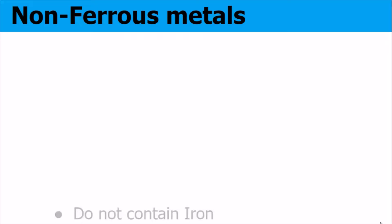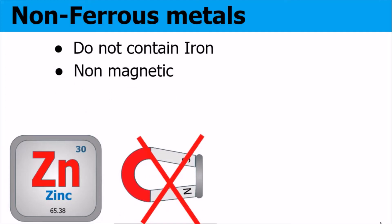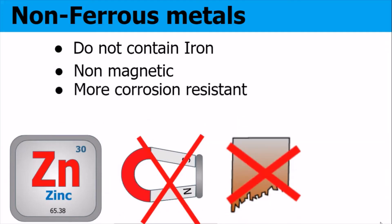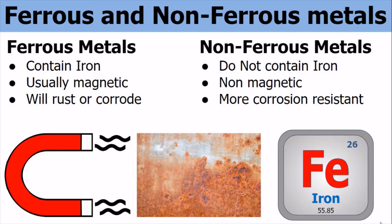Non-ferrous metals. These do not contain iron. They are non-magnetic and are generally more corrosion resistant, but they are generally more costly than ferrous metals. To summarise: ferrous metals contain iron, are usually magnetic, and will rust or corrode. Non-ferrous metals do not contain iron, are non-magnetic, and are more corrosion resistant.